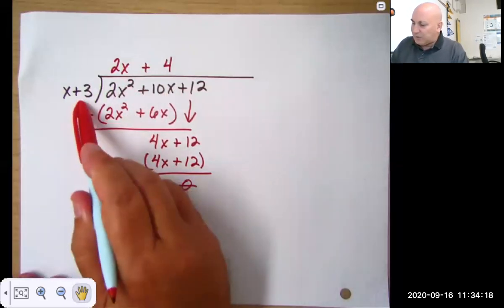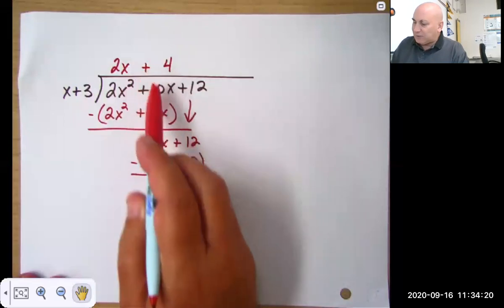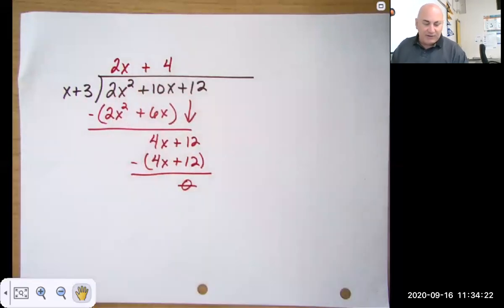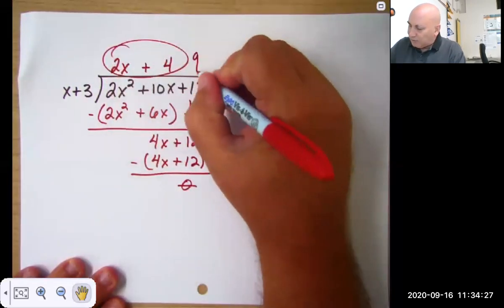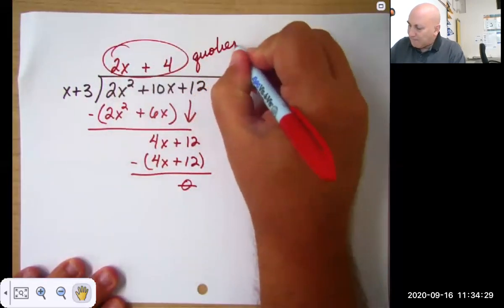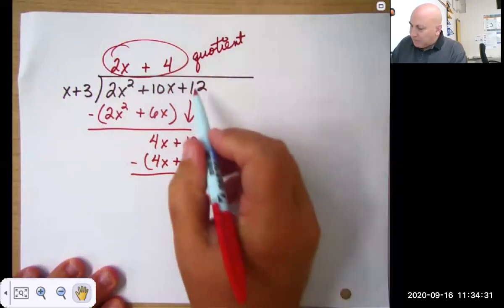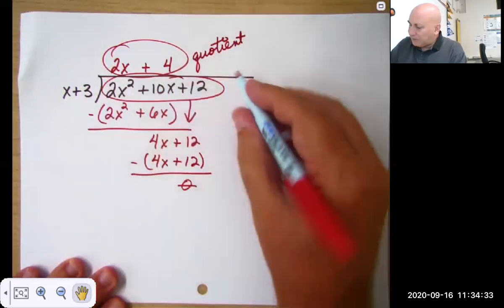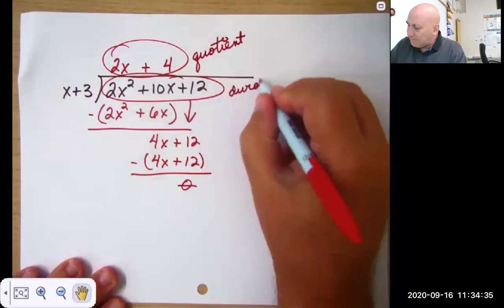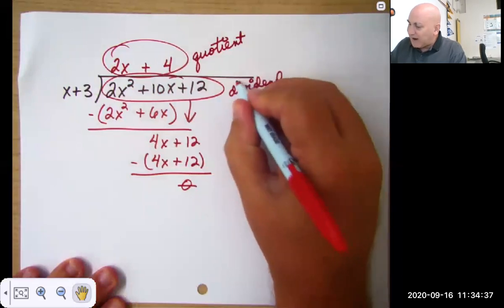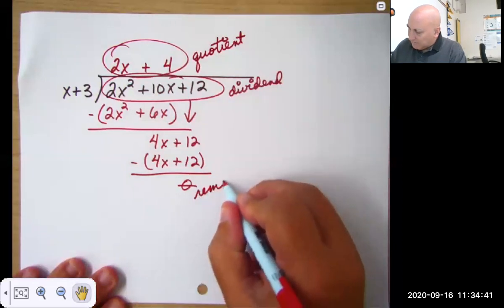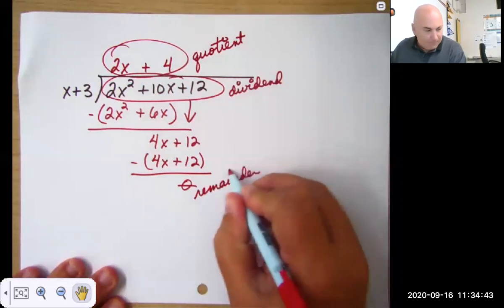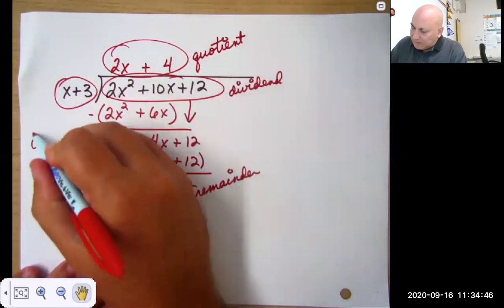So x plus 3 times 2x plus 4 gives us this polynomial. This up here is our quotient. This is our dividend. I always remember divided in. This is our remainder, and this is our divisor.